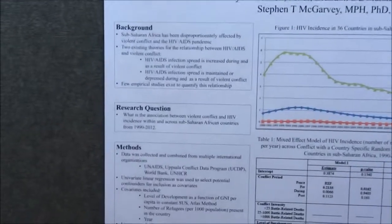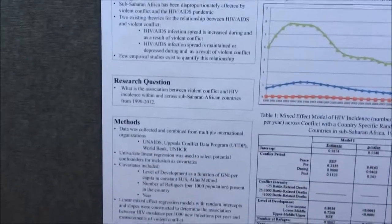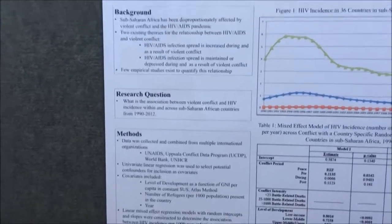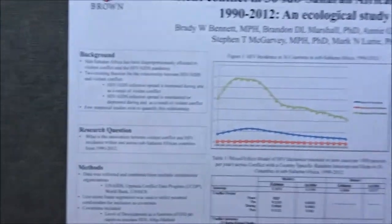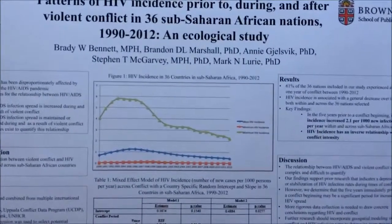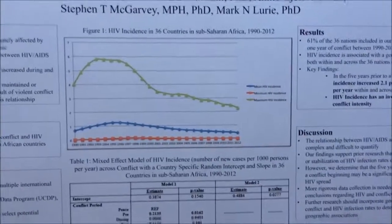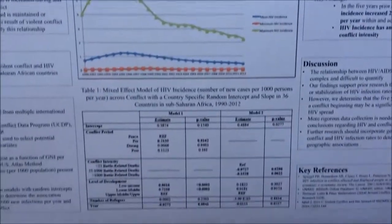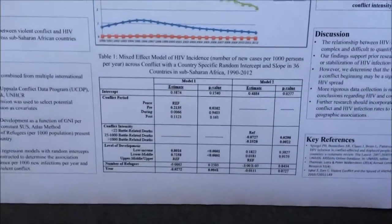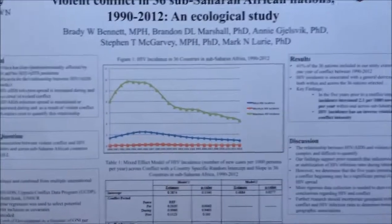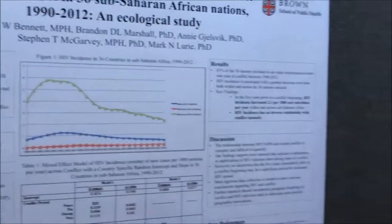What we ended up finding was that during a pre-conflict period — that's the five years prior to a conflict beginning — there's a significant increase in HIV over the course of the 23-year period that we looked at.